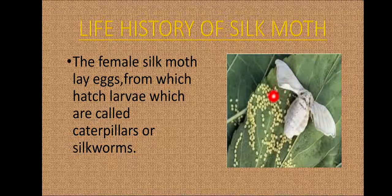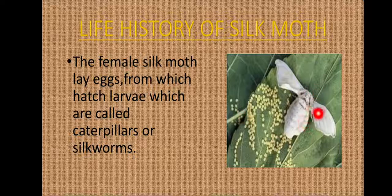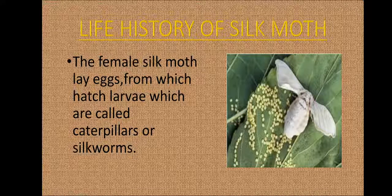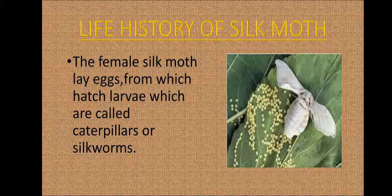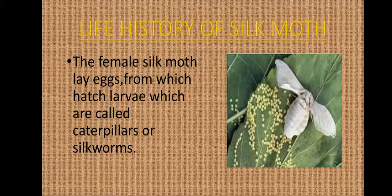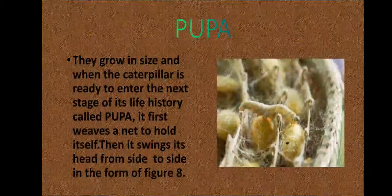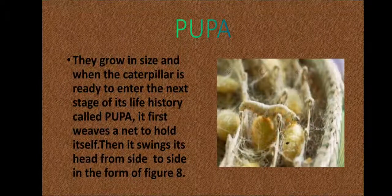These leaves can be of different plants, but the most popular plant on which the silk moth lays its eggs is the mulberry plant, so these are generally mulberry leaves. The silk moth feeds on these leaves, and the larvae or caterpillars that hatch from the eggs will also feed upon these leaves.